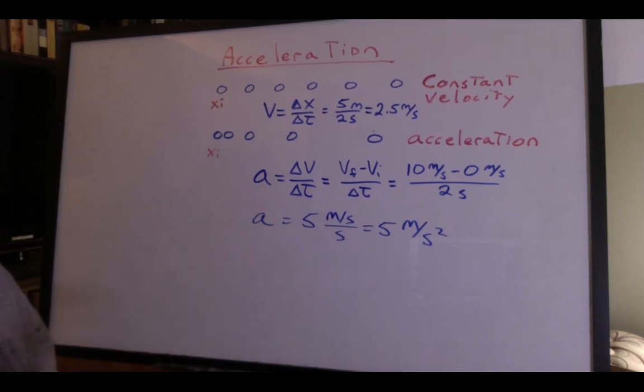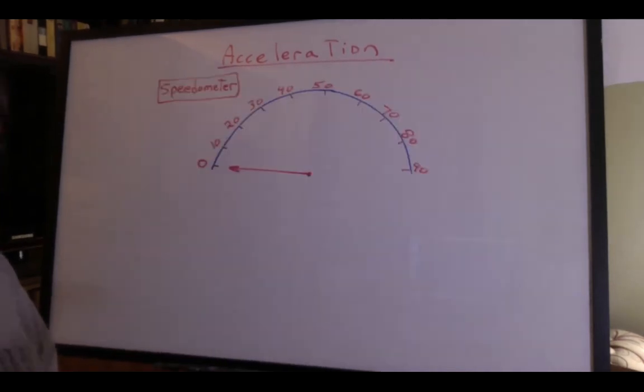All very mathematical. But what's it look like in real life? Maybe we should look at a speedometer from your car. That's going to tell us how fast we're going in miles per hour.